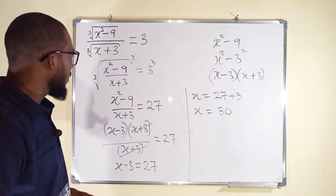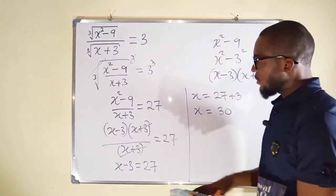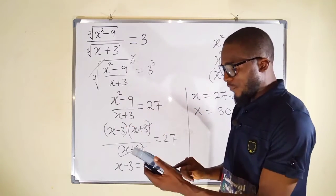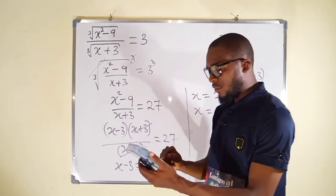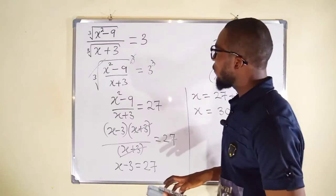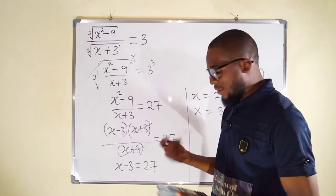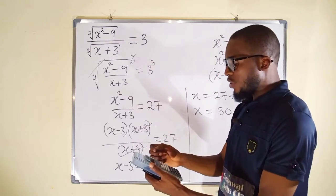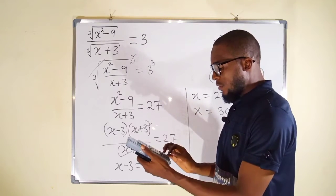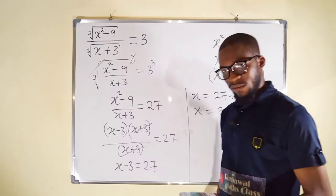30 is the value of x. We can check it to verify. If x equals 30, we have 30 squared which is 900, minus 9 gives 891. And 30 plus 3 is 33. Dividing 891 by 33 gives us 27, which matches the right-hand side. Therefore, the value of x is confirmed to be 30.